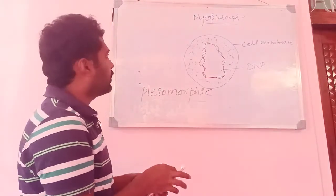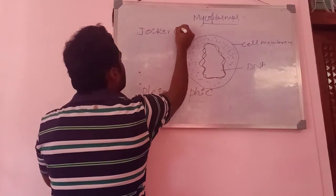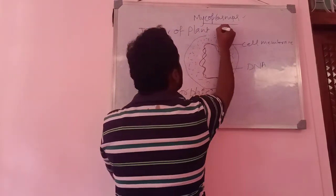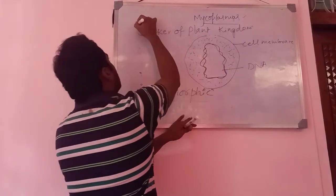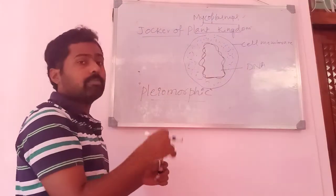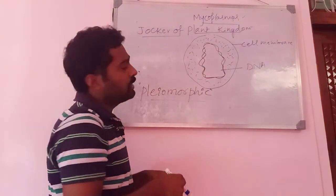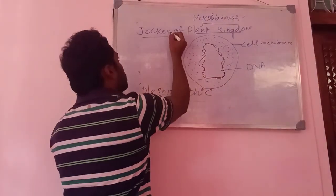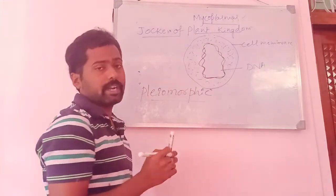Because mycoplasmas are found in different forms, they are also known as 'jokers of the plant kingdom.' Even though they now belong to Kingdom Monera, this name originated when bacteria and other organisms were included in the plant kingdom. They are called jokers because they occur in various shapes and forms.